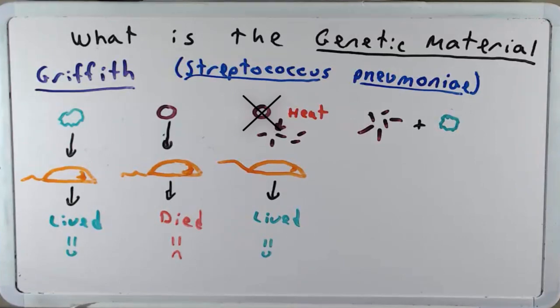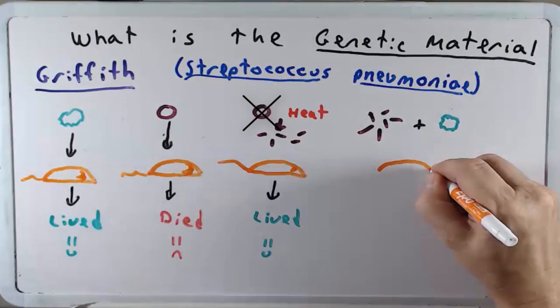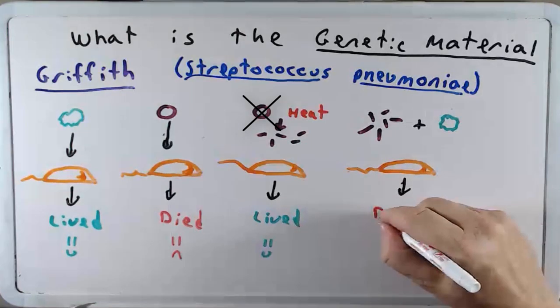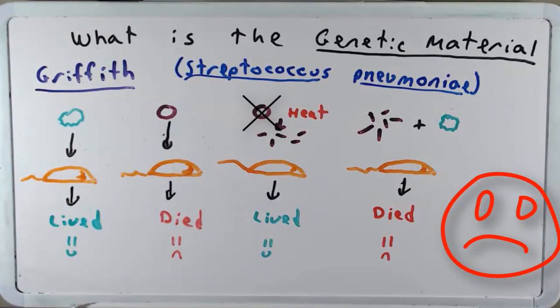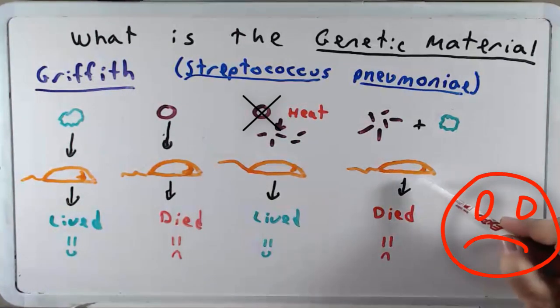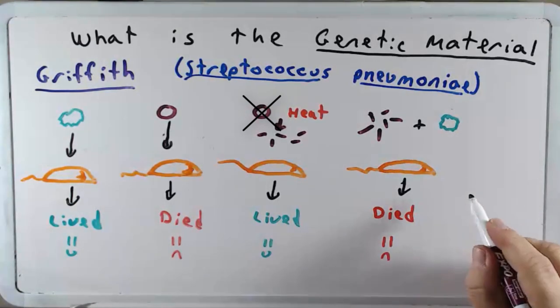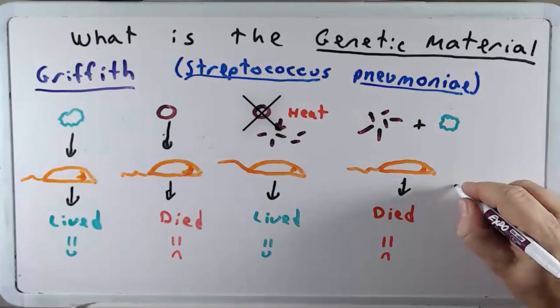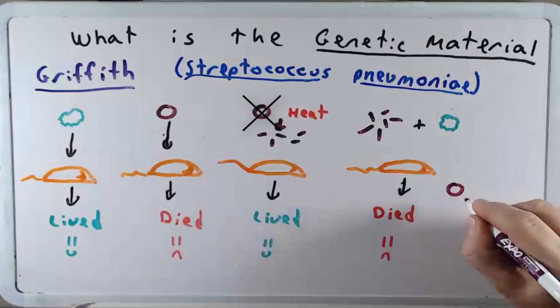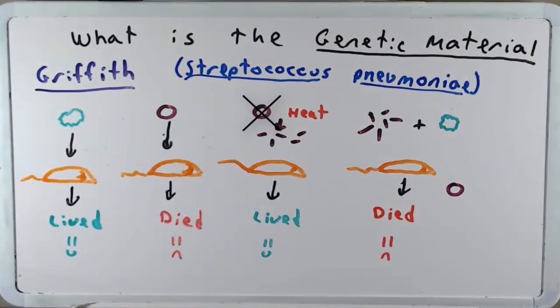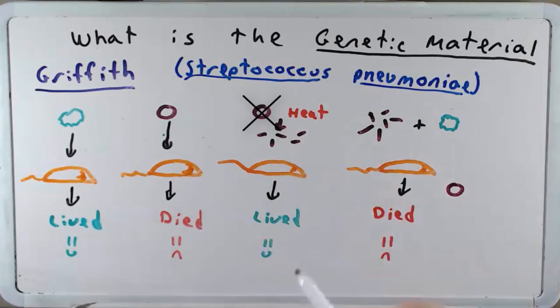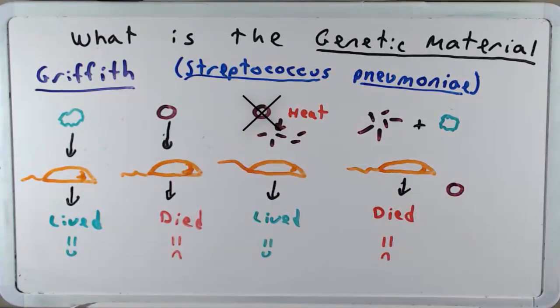When he took that and put it into another mouse, the mouse died. And when you took samples from the mouse, the only kind of bacteria that were taken from it, that survived anyhow, were smooth. We never put a smooth bacterium in it. Only put the rough bacterium and these debris particles from this smooth bacterium. So what happened?